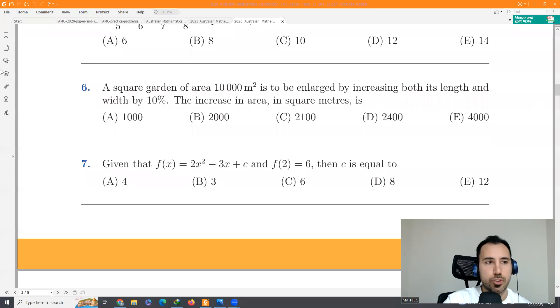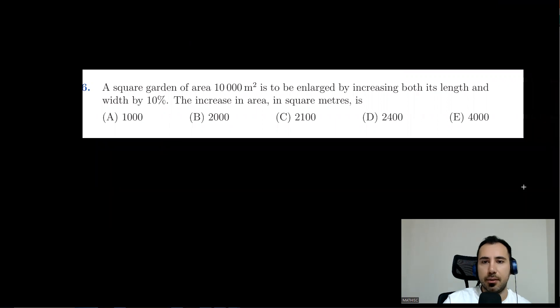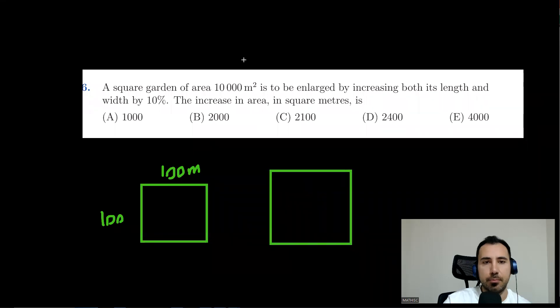Question six. We have a square garden with that area. And we want to increase both its length and width by 10%. So what is the increase in the area? We know that this is 100 meter by 100 meter. And after increasing it by 10%, so it will be 110 meters multiplied by 110 meters. That's a 10% increase.